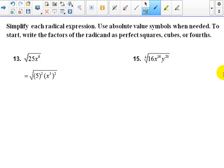Our next two problems, 13 and 15, so simplify each radical expression. Use absolute value symbols when needed. To start, write the factors of the radicand as perfect squares, cubes, or fourths. So on 13, we're going to use perfect squares. On 15, we're going to use fourths. We need to rewrite all of our radicands as factors of our index, the powers of our index.